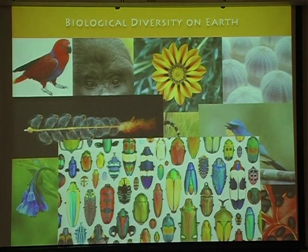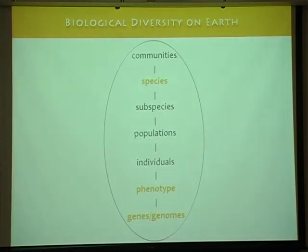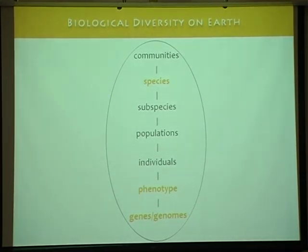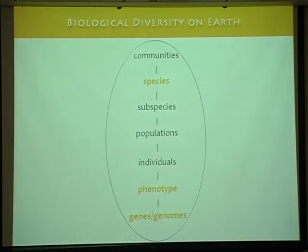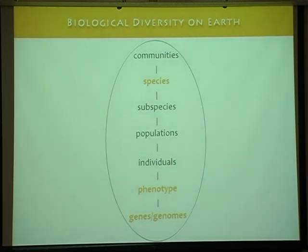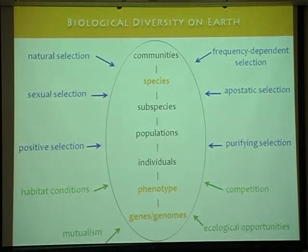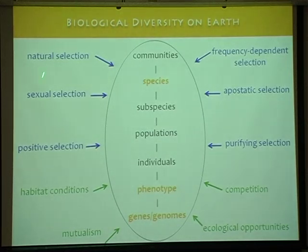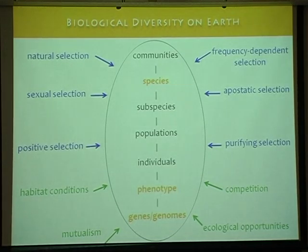Usually when we think about biological diversity, we think about species. But you can actually think about biodiversity at various levels — from genes and genomes to phenotypes, all the way to biological communities. There is a lot of work happening at higher level processes. There are various ways of thinking about this, and of course we have several types of selection pressures shaping this organization, along with many ecological factors which influence how selection actually acts.